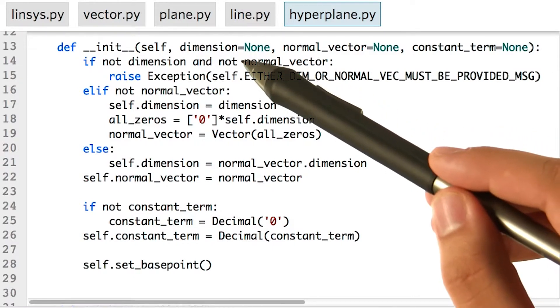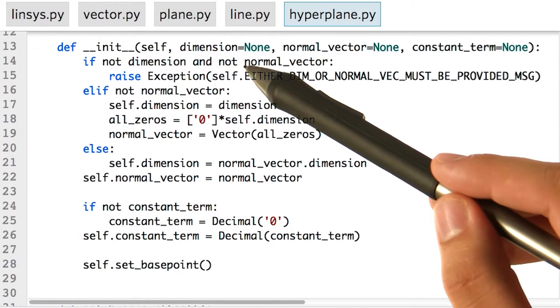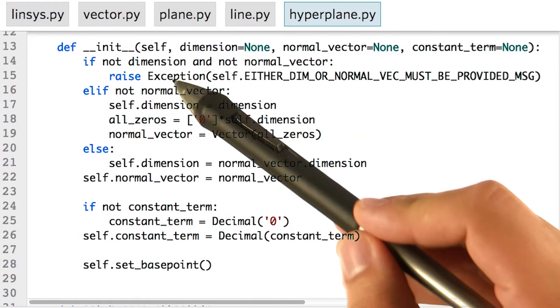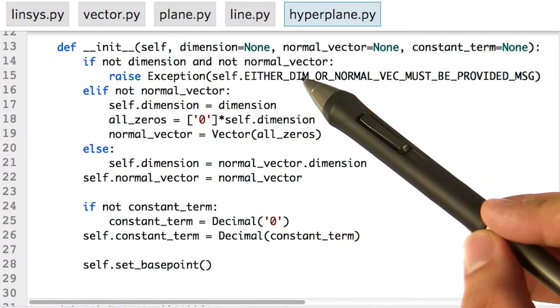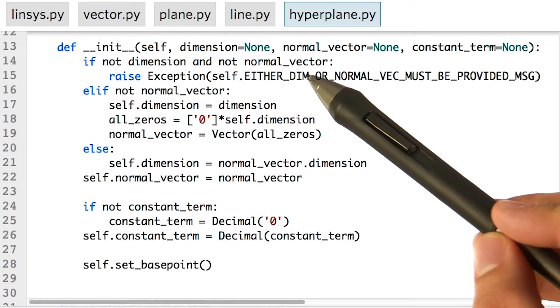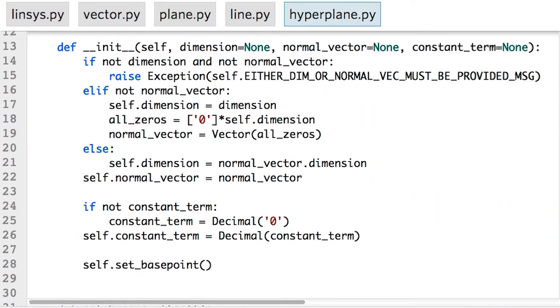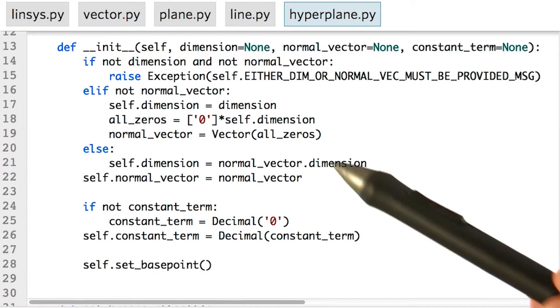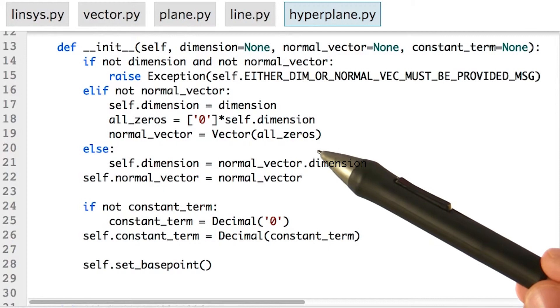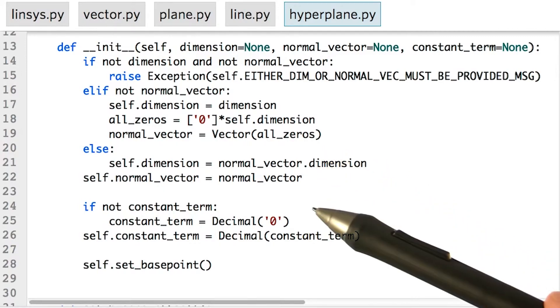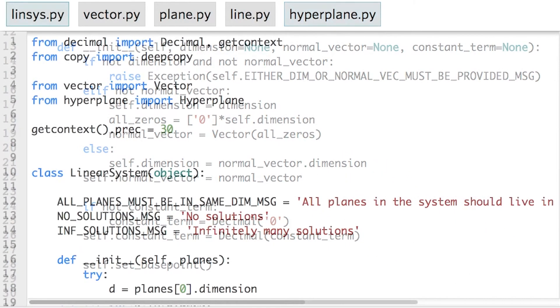If both the dimension and the normal vector are missing in the initializer call, then I can't figure out which dimension is being asked for, so I raise an exception. Otherwise, I either set the normal vector to be all zeros in the given dimension, or I set the dimension to be the dimension of the normal vector given. And that's pretty much it.